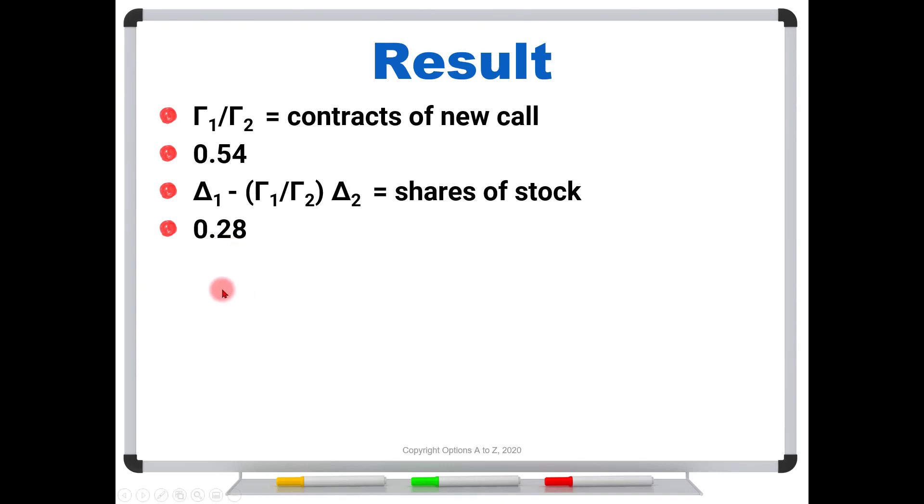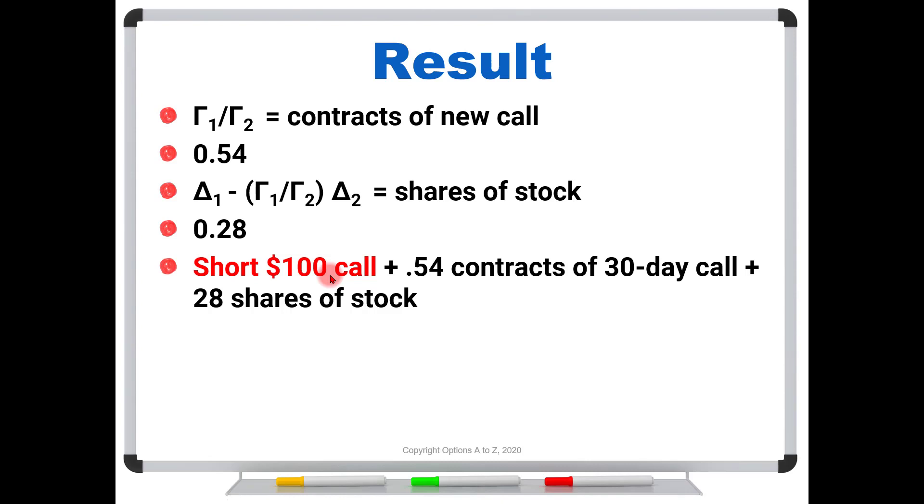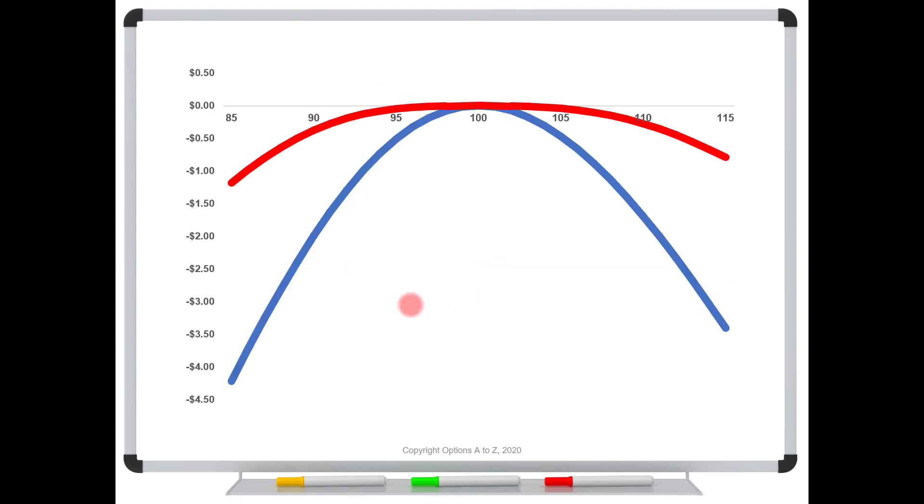So if we did this in our account, we would have short the $100 call that was the first position that we sold. We're going to be long 0.54 contracts of the 30-day call. This is the second option, plus 28 shares of stock. And if we do this, we have now created a gamma neutral strategy. And this is what we've done.